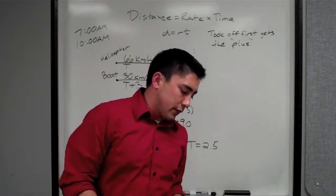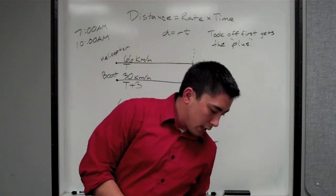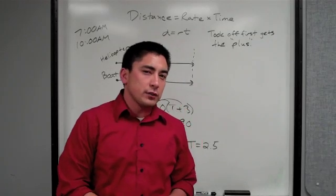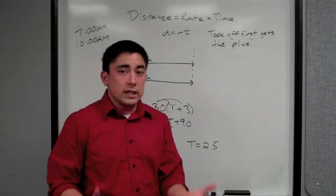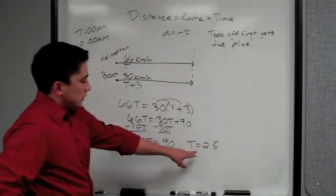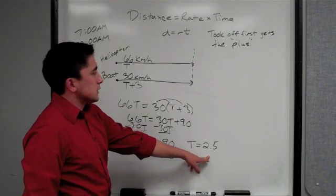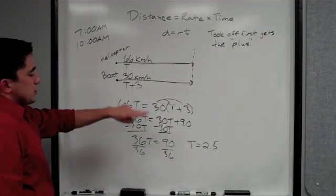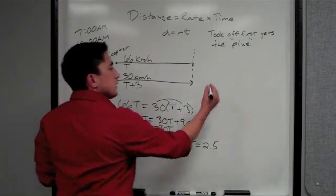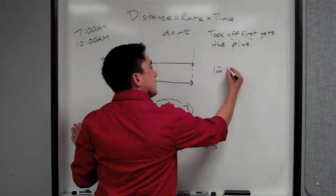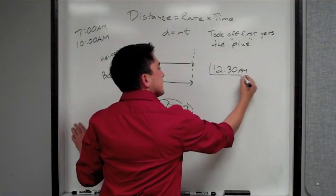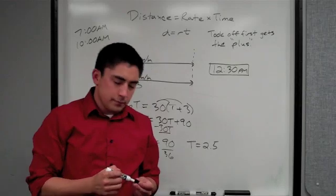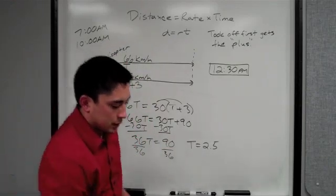Notice how the question at the very end says, at what time does the helicopter overtake the liner? So it's actually what time of the day does it do that? If it's 2.5 hours after the helicopter takes off, you're going to add 2.5 hours to 10 AM. So your final answer would actually be 12:30 PM.